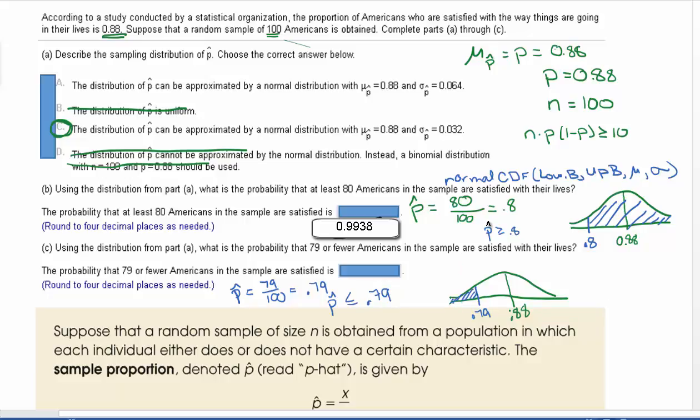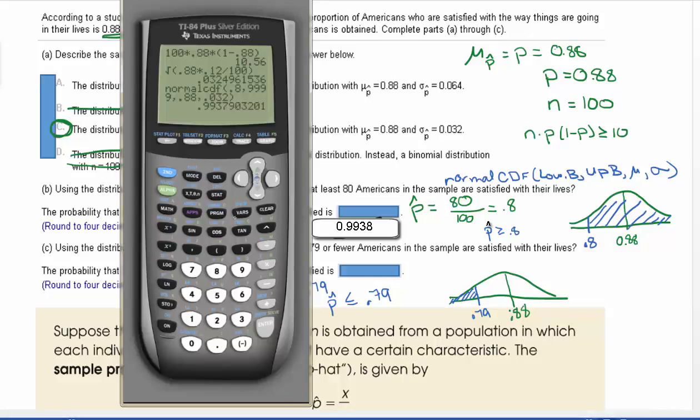Same idea with using our calculator. We're going to go through and do second distribution. We're going to either hit number two or scroll down. Our lower bound, well, this time we don't have a lower bound. We don't have the smallest value, so I'm going to pick a big negative number. So I'm just going to do negative 9999.